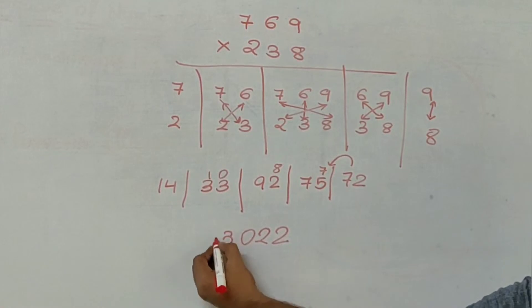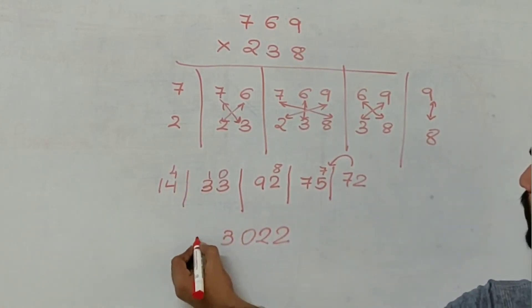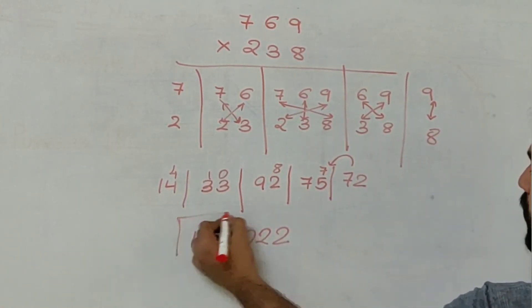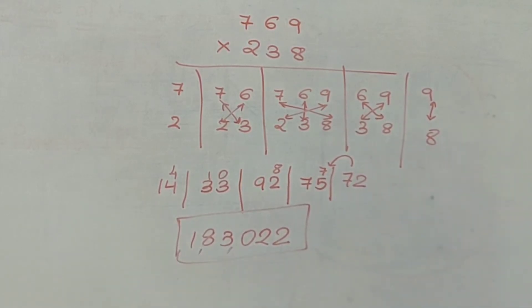0 here. 33 plus 10 gives me 43. 14 plus 4 is 18. So my answer is 183,022.